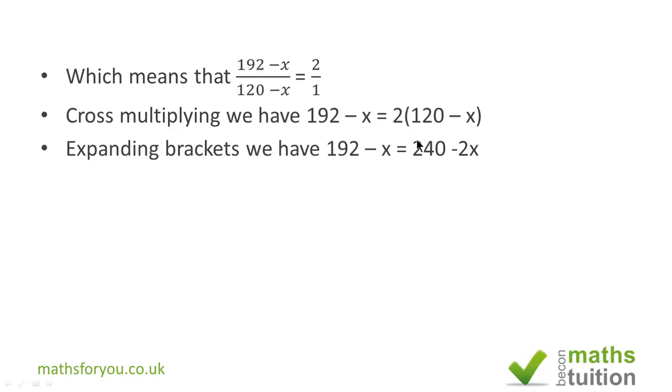Expanding the brackets, 2 times 120 gives you 240, and 2 times minus x will give you minus 2x. Taking the x across, we have that 2x minus x is equal to 240 minus 192, and that gives us an x value of 48.